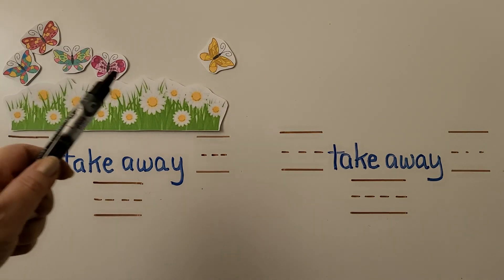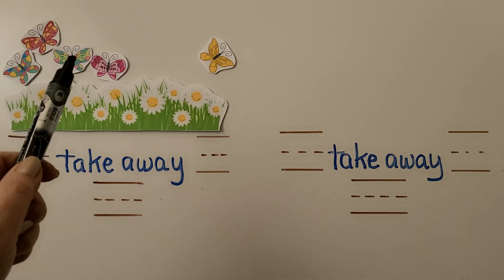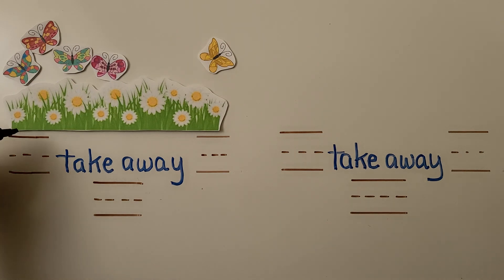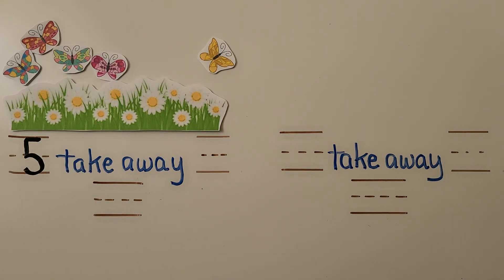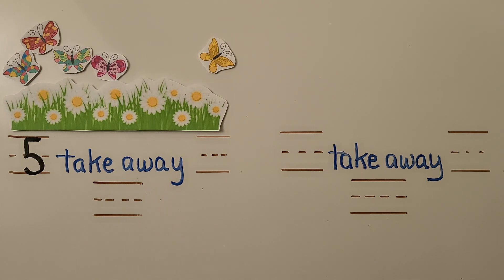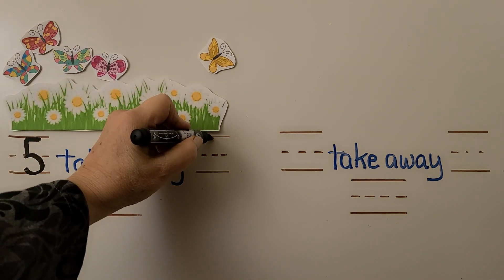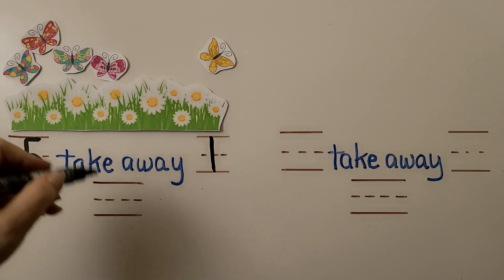Here we have some butterflies in a garden. First, we count all the butterflies we see. One, two, three, four, five. We write the number in all — there are five. Five butterflies are at the garden. One butterfly leaves. How many butterflies are left? How many are still at the garden after the one is gone? There were five in all, and we take away one. We can count how many are left — one, two, three, four. We had five, we take away one, and there are four left in the garden.